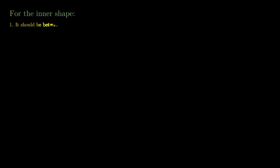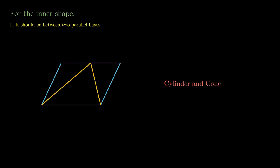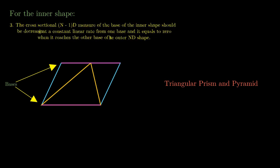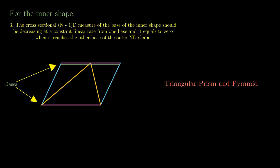For the inner shape, the first condition is that it should be between two parallel bases of the outer shape, as is true for cylinder and cone or triangular prism and triangle-based pyramid. The second condition is that the inner shape should have one base overlapping a base of the outer shape while the other end should be touching at just one point of the outer shape. The third condition is that the base of the inner shape should be decreasing toward the point end at a constant linear rate.